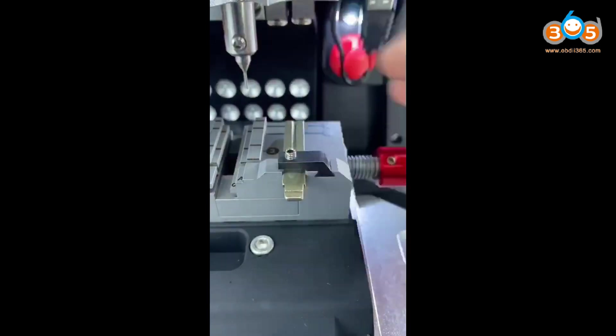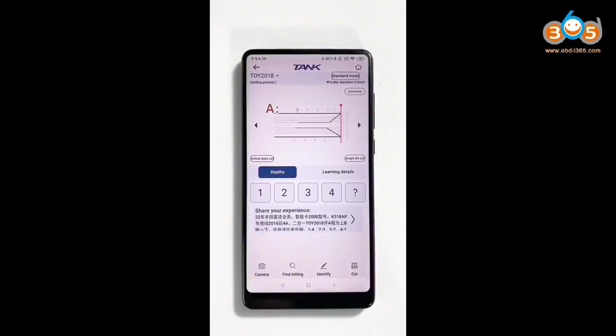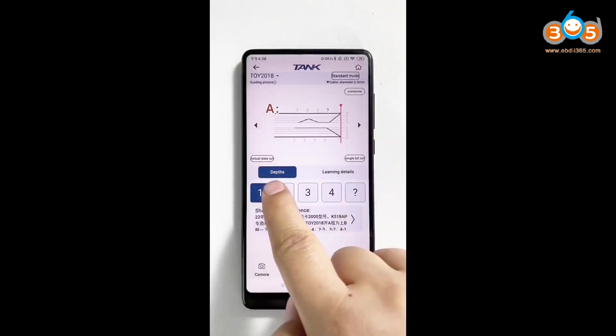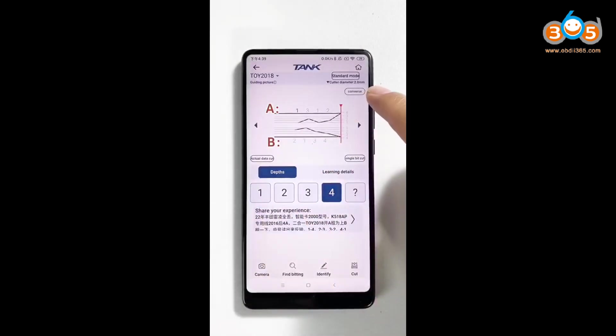This tool makes the key blank more stable. Lifter A is up. B is down. And then, click Converse. Key bitting is already changed.